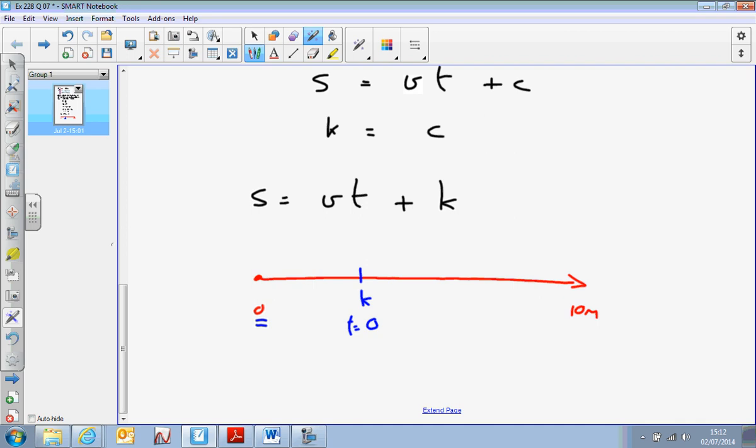So that represents, effectively, the initial displacement. s equals vt plus k. The displacement from some position here equals the velocity of the object multiplied by the time plus whatever distance it had moved before we started the timer.